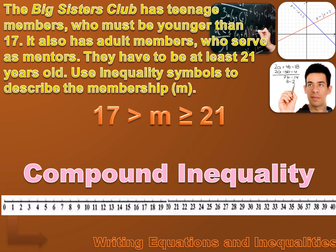How do we graph this solution? We create a number line and graph each inequality separately. For M is less than 17, we put an open circle on 17 and draw an arrow to the left, including every number to the left of 17. For M is greater than or equal to 21, we put a closed circle over 21 and draw an arrow to the right so every number to the right is included. That is a compound inequality.